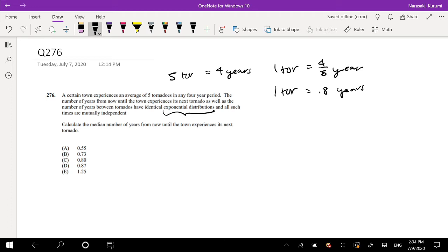Calculate the median number of years from now until the town experiences the next tornado. So we know by median definition, it is equal to zero to median of this equation where this is our mean. Because this is the average, on average they have one tornado every 0.8 years, and we're looking at years.